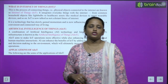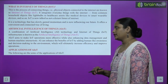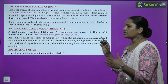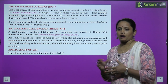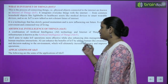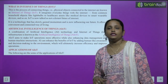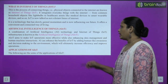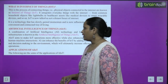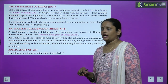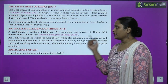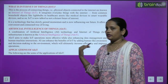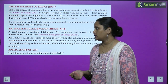Next आता है हमारा Artificial Intelligence of Things, जिसे हम AIoT कहते हैं। ये combination है Artificial Intelligence का और Internet of Things का — जब AI और IOT को आपस में जोड़ते हैं तो बनता है AIoT। AIoT aims to make its operations more effective while also enhancing data management and human-machine interaction — AIoT के operations को और भी ज़्यादा enhance करना, data को manage करना।